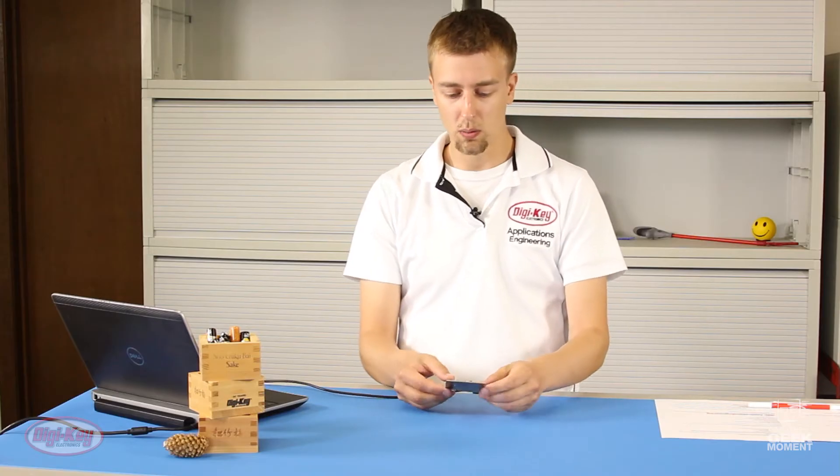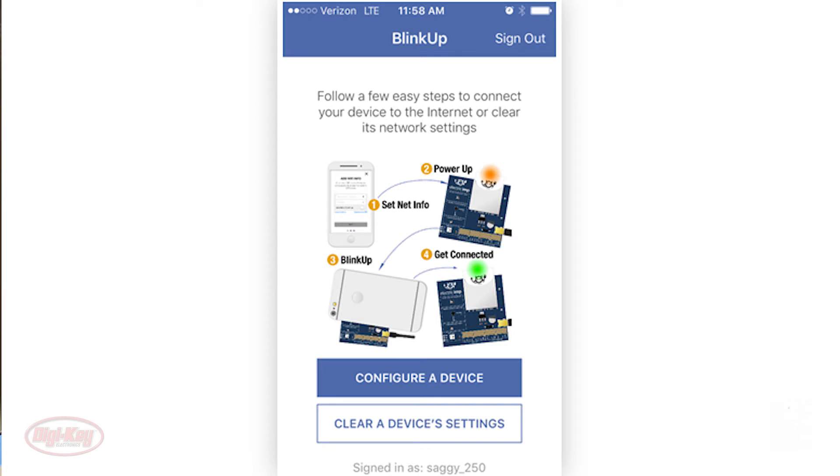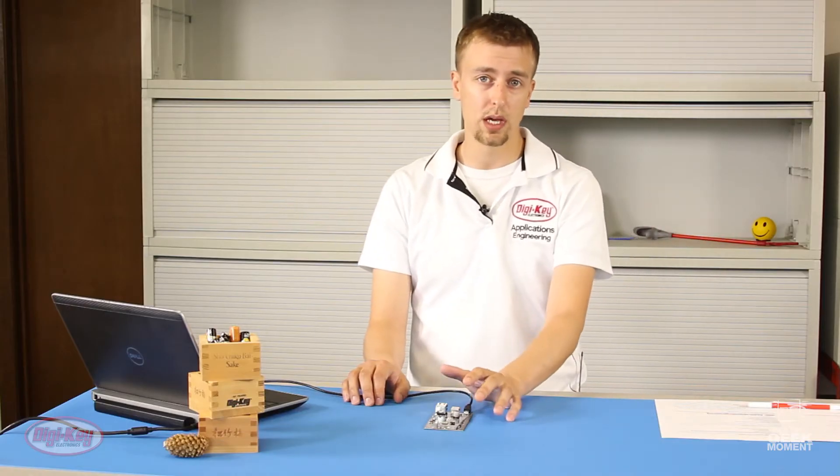And the way that this is going to work, first on the app, there's a configured device. So you can either configure the device or clear a device's settings, configurations. The device, the imp, can only be configured to one wireless network at a time.